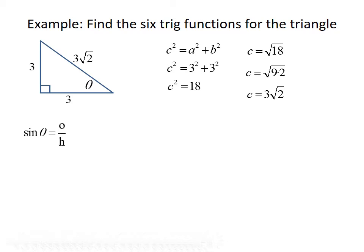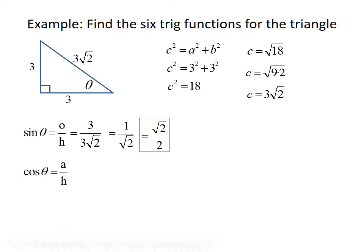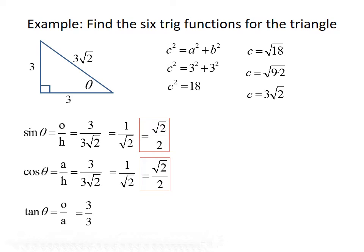Now that we know all three sides of our triangle, let's find our trig functions. Starting with sine of theta — since sine equals opposite over hypotenuse, that's 3 divided by 3 root 2. The 3s cancel out, giving us 1 divided by the square root of 2. Rationalizing by multiplying numerator and denominator by root 2 gives us root 2 over 2. Cosine of theta is the adjacent side divided by the hypotenuse, which is also 3 divided by 3 root 2. Again, the 3s cancel, giving 1 over root 2, and rationalizing gives us root 2 over 2.